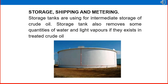Storage, shipping, and metering: once crude oil is gas-free, water-free, and salt-free, it is sent to a storage tank. Storage tanks are used for intermediate storage of crude oil and also remove some quantities of water and light vapors if they exist in the treated crude oil. We will discuss storage tank safety features, various components inside it, and a special type of storage tank in detail in our coming classes. This is a simple picture of a storage tank.